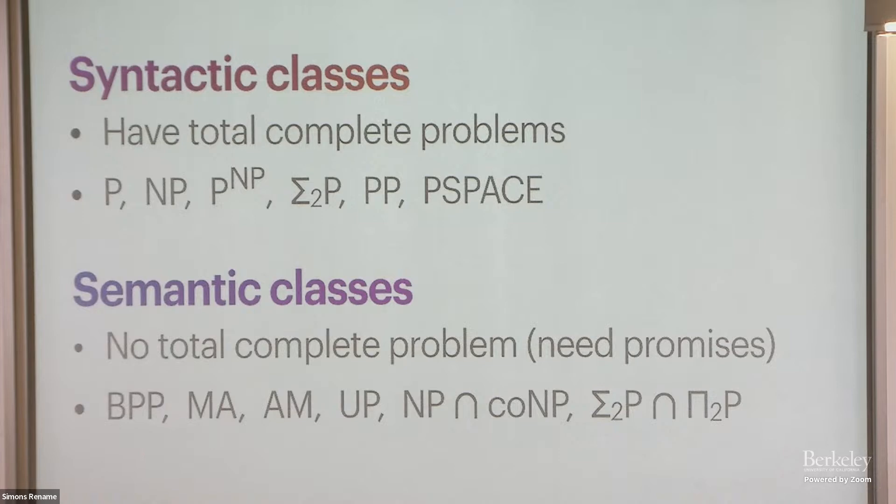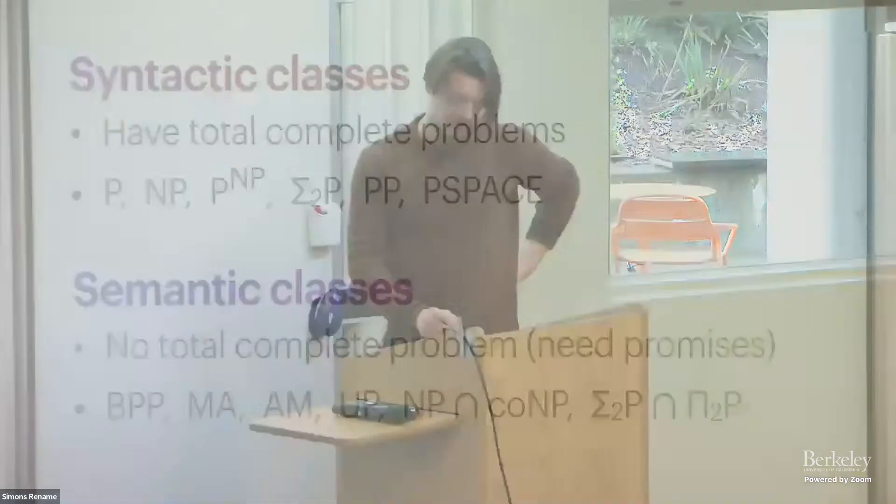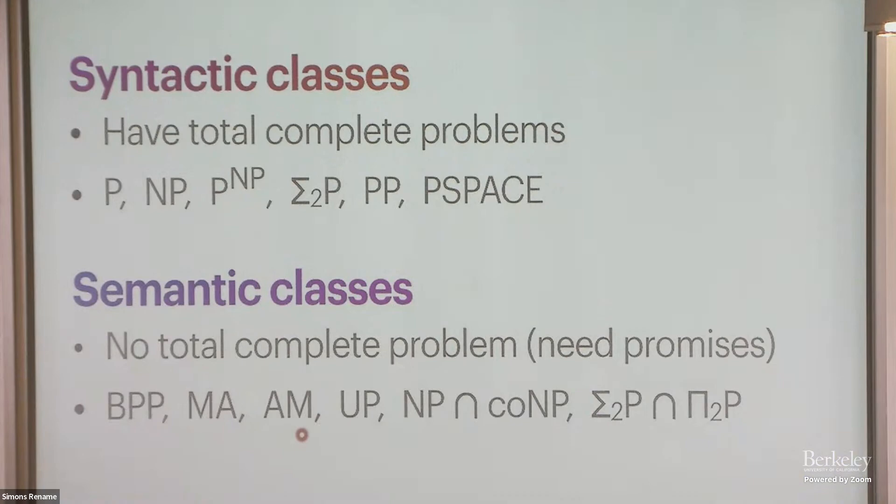So let's say syntactic, by definition, means that the class has complete problems. So our usual classes P and NP are syntactic, but there are also interesting classes that don't seem to have complete problems. Somehow the definition of the class involves some sort of promise. So maybe the most basic example is just bounded-error probabilistic polynomial time. So there's some kind of promise that the randomized algorithm produces the right answer with high probability. So typically you see classes that have some randomness involved, or maybe you could have a version of NP that guarantees a unique witness. Why do I have a unique witness? Well, that's sort of a promise, a semantic promise. Also, if you look at intersections of syntactic classes, it could still result in a semantic class.